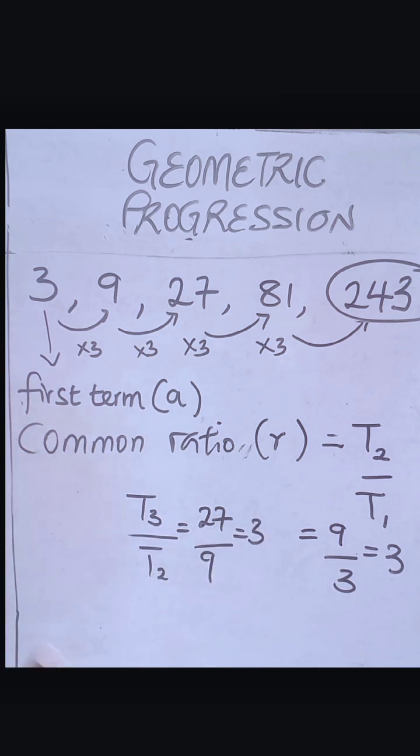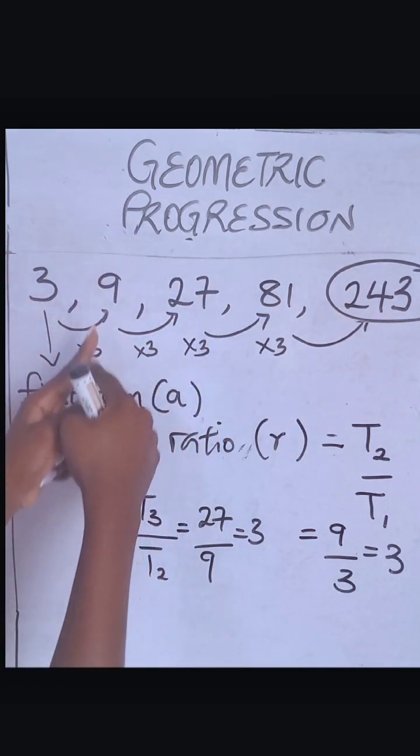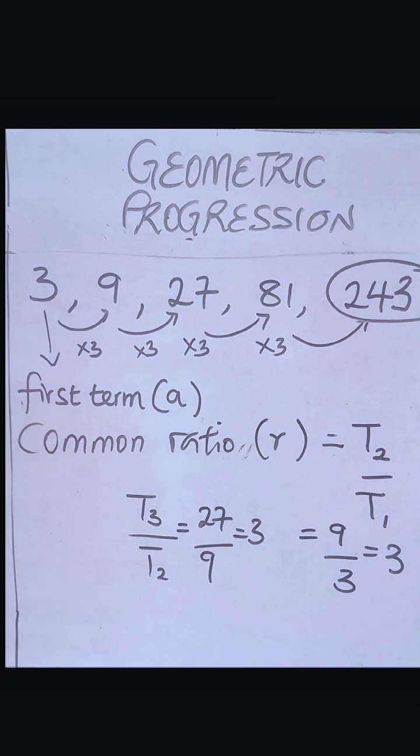So whatever term you pick, just know you have to pick the next divided by the previous, the next divided by the previous. Whatever one you pick, you would always get a common ratio.